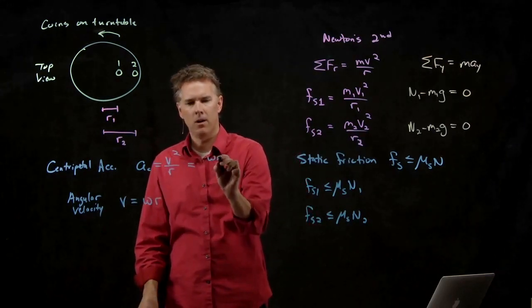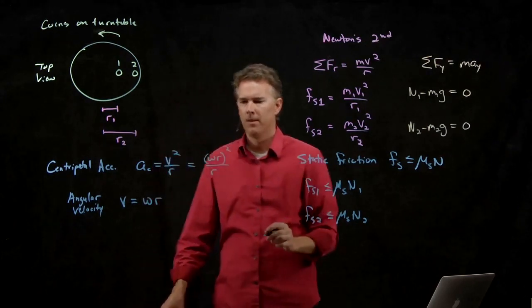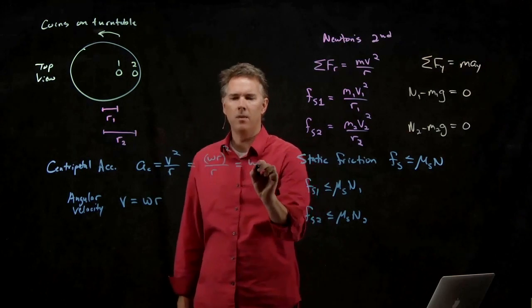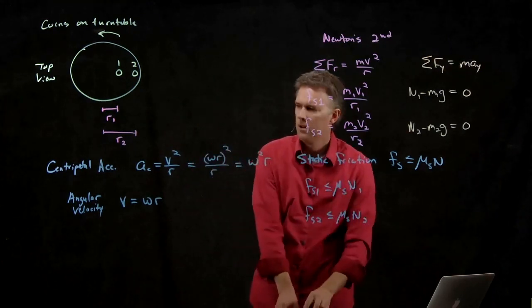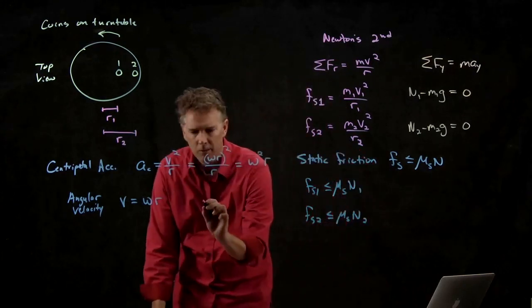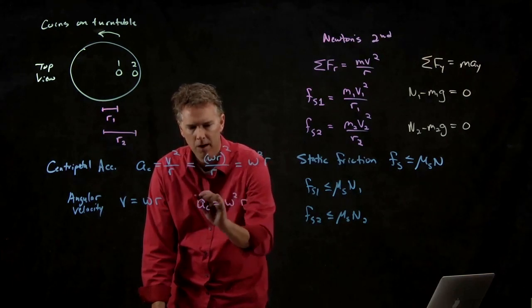I get omega R quantity squared divided by R. And so I just get omega squared times R. So centripetal acceleration, you can write as omega squared times R.